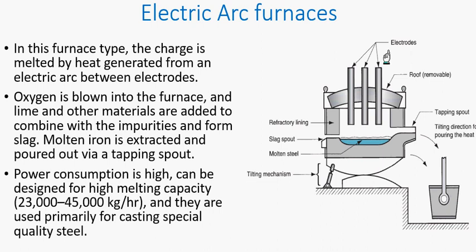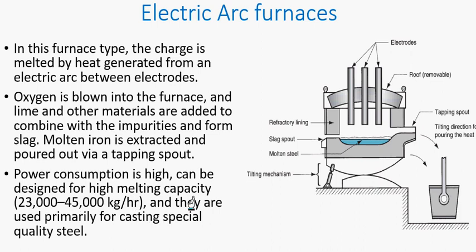Next is the electric arc furnace. This is done with the aid of electrodes. As current passes through the electrodes, an arc is generated which causes the heating. Oxygen can be blown into the furnace so that impurities can be removed; the impurity is formed as slag, which is lighter and less dense and sits on top. This furnace has a large flow rate capacity — from 23,000 to 45,000 kg per hour — and is predominantly used for casting high quality steel.